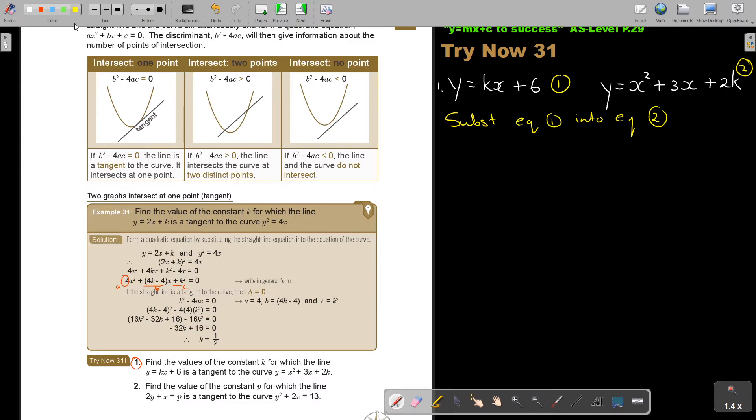Because it's Y, it's actually very easy. I'm just taking this and I throw it in there. And what do I get? I get KX plus 6 equals X squared plus 3X plus 2K.